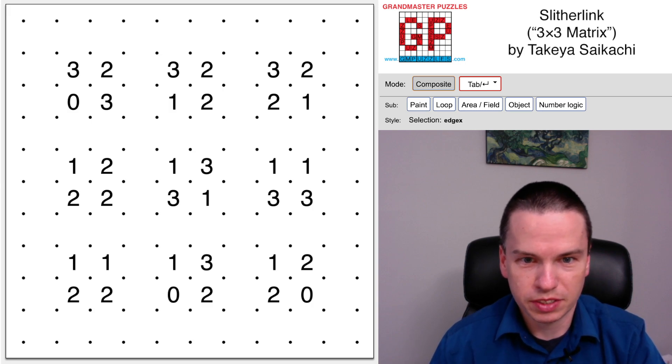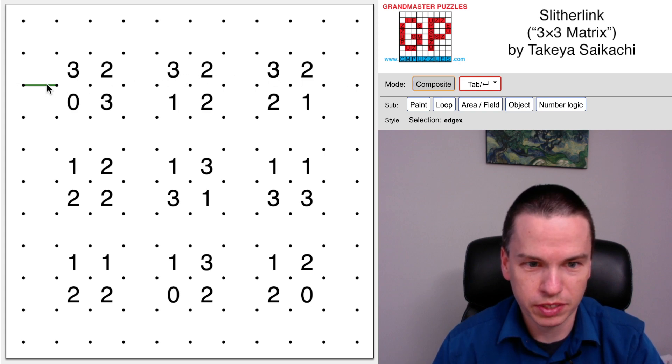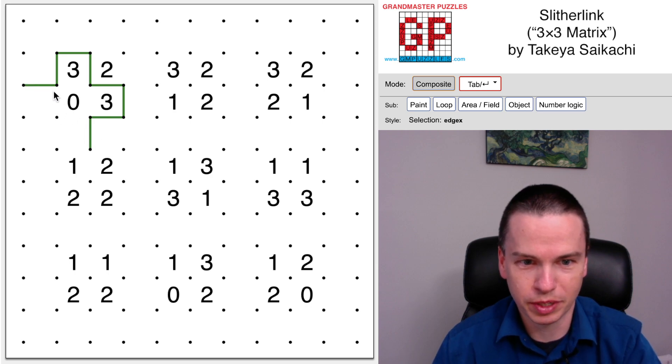So here to solve this Slitherlink by Takeo Seikachi called 3x3 Matrix, and we have a few places to make quick starts. For instance, these three zero clues, which you'll recognize even from yesterday's puzzle by Grant, are quick places to go.